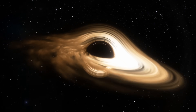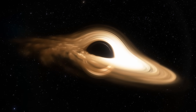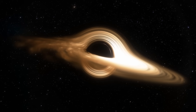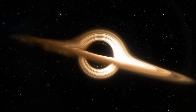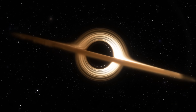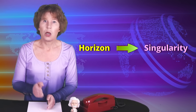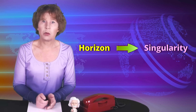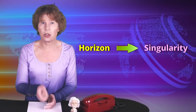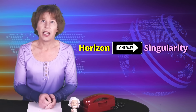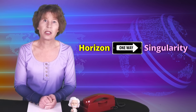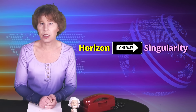Black holes in Einstein's theory have two defining properties. One is the event horizon, a closed surface from within which nothing, not even light, can escape. The other characteristic property is the singularity in the middle of the horizon. In Einstein's theory, you can't have one without the other. That's the brief summary of the Penrose-Hawking singularity theorem. Whenever matter collapses to form a horizon, it'll also create a singularity, and everything that falls into a black hole will also inevitably fall into the singularity.